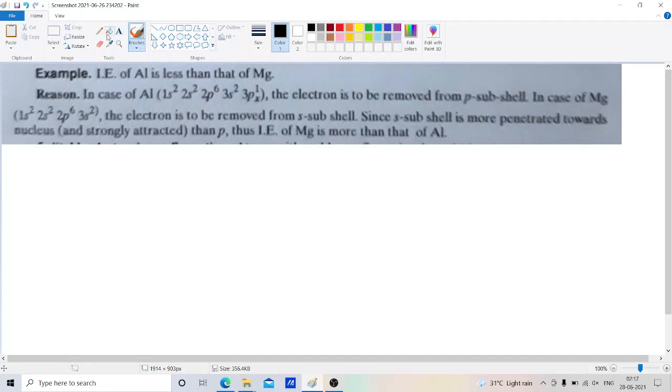In case of aluminum, the atomic number is 13. The electron configuration of aluminum is 1s² 2s² 2p⁶ 3s² 3px¹.